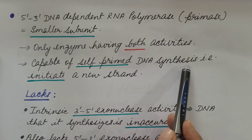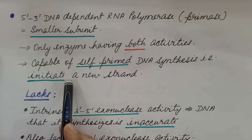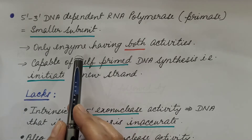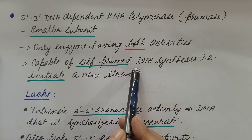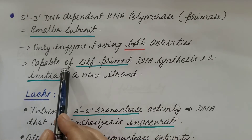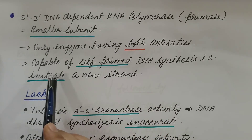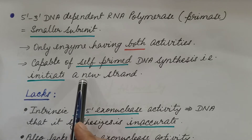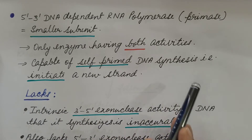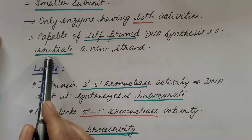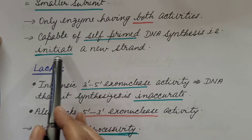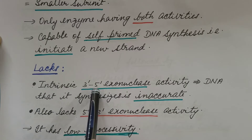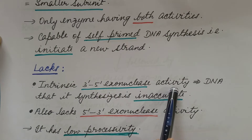Hence, it is capable of self-primed DNA synthesis — that is, it can initiate a new strand. Or we can say that it synthesizes its own primer and then synthesizes a new strand. It is itself able to start new strand synthesis. None of the other DNA polymerase enzymes are capable of initiating a new strand.